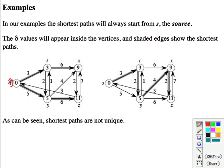First let's note that we always start from s, the source. We're going to write the delta values, the shortest distance to the vertex inside the vertices. Here we can see there's shortest paths from s to t to x going that way at a cost of 9. But you can also go from s to t to y to x at a cost of 9. So shortest paths are not unique.